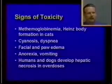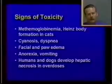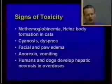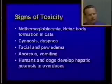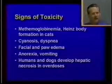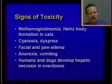Glutathione is fairly rapidly depleted in an overdose situation, and that's when toxicity occurs. Treatment involves trying to replace glutathione. Symptoms in cats — the most susceptible species — include methemoglobin anemia, where the blood takes on a brownish cast due to methemoglobin formation, as well as Heinz body formation within erythrocytes. Because methemoglobin cannot carry oxygen, animals exhibit cyanosis and dyspnea. Cats often also exhibit facial and paw edema, anorexia, and vomiting. In overdose situations, humans and dogs — as well as cats — can develop hepatic necrosis.